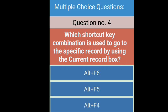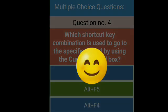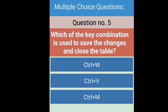Fourth question: Which shortcut key combination is used to go to the specific record by using the current record box? Which shortcut key can be used to go to a specific record, a particular specific record? The right answer is Alt plus F6.